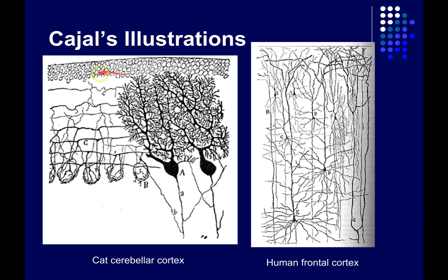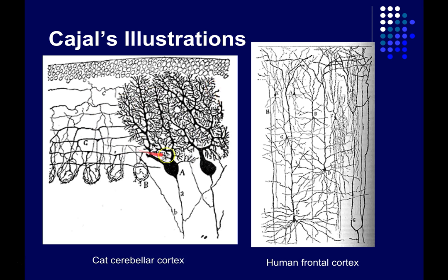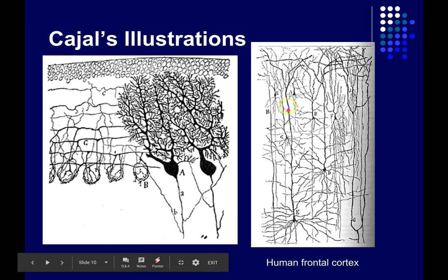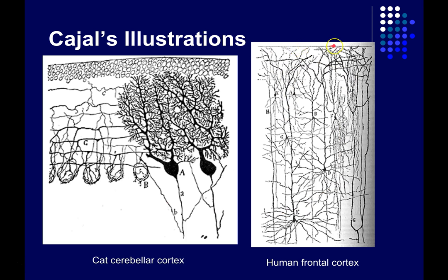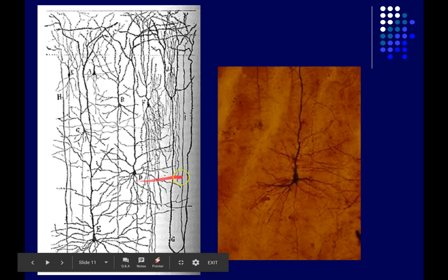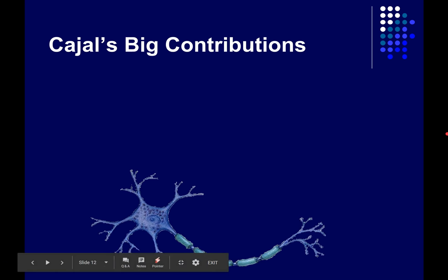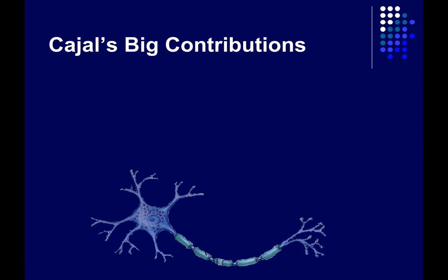These are some of his illustrations. This shows a little section of cat cerebellar cortex — you can see the Purkinje cells, some of the largest neurons in the nervous system, along with basket cells. This is a section of the human cortex, the crinkly outer covering of the brain, where you can see the pyramidal cells we saw earlier. Here's a slide showing a stained pyramidal cell, and these are some of Cajal's drawings of the same kinds of cells — you can see how accurate his drawings were.